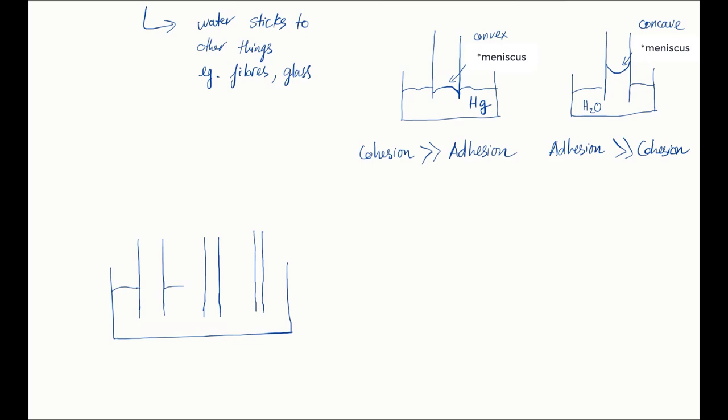Now let's say that we have three tubes of different width, partially submerged in water. Which tube would have the water being drawn up the highest? It would be the narrowest tube. Why?